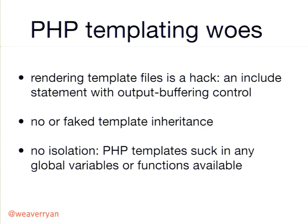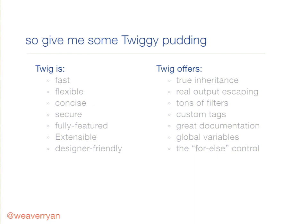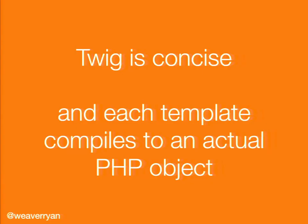We want the brevity of templates but the isolation of object-oriented programming. So, introducing Twig — it's fast, and its syntax is very short and easy to read. Ultimately, Twig compiles down to a PHP class. You'll see this if you dig inside Drupal 8 — you can actually go find the compiled version of your template. In Twig we had a block body; it compiles down to a block body function in PHP, iterating over things and echoing content. You're not going to care about that day to day, but that's what's really going on behind the scenes.